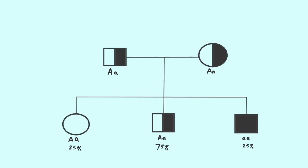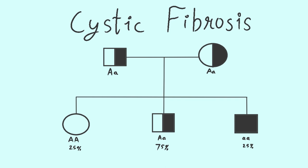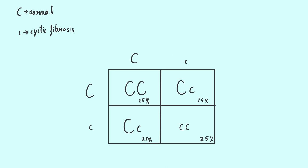Example 2: autosomal recessive inheritance. Consider a family with a history of cystic fibrosis, an autosomal recessive disorder. The pedigree chart shows that both parents are carriers of the cystic fibrosis gene, but they are not affected by the disorder. The Punnett square shows the possible genotypes of the offspring. There is a 25% chance that each offspring will inherit two copies of the cystic fibrosis gene and be affected by the disorder, a 25% chance that they will inherit no copies and be unaffected, and a 50% chance that they will inherit one copy of the cystic fibrosis gene and be a carrier. Stay curious and thank you for watching!